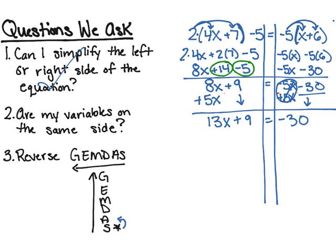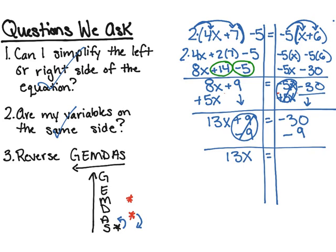Are all my variables on the same side? Yes, they are both on the left side, so step 2 is done. The next step is finishing the problem and getting x all alone. I can see I have addition, and I also see multiplication. I'm going to move what is on the side with my variable — I have a positive 9 with my variable, so the inverse of addition is subtraction. I'm going to subtract 9 from both sides. Positive 9 minus 9 equals 0 — that's a zero pair. I rewrite 13x, rewrite my equal sign, and now I have negative 30 minus 9, which equals negative 39. When you add two negatives, it creates a bigger negative.